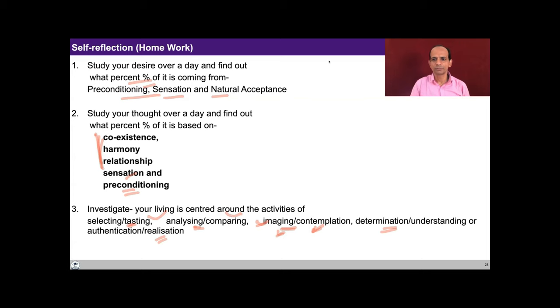So this is the assignment for you based on this lecture. In today's lecture we saw how the higher level activities guide the lower level activities — how imaging gets transformed, how analyzing and comparing gets transformed, and how selecting and testing gets transformed. This transformation is something desirable for every self and essentially what we are working for. In the previous lecture we talked about awakening to higher level activities — contemplation, understanding, and realization — and in this lecture we saw how they guide the lower level activities. Thank you.